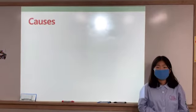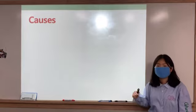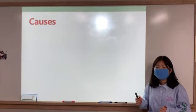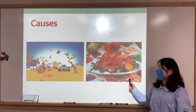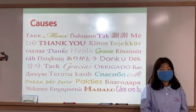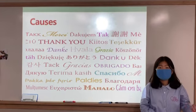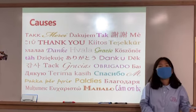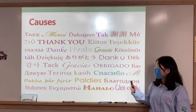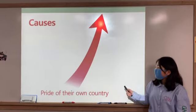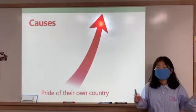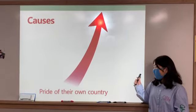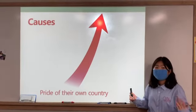Now I'll talk about the causes of racism. First, racism starts because of different cultures and languages. For example, they can tease a person who speaks different languages or tease about their appearance. Second cause is if they have strong pride of their own country, they can ignore people from other countries.